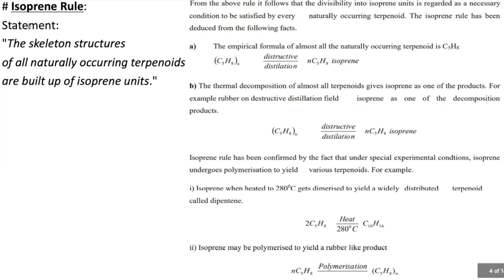What is the isoprene rule? The isoprene rule states that the skeletal structure of all naturally occurring terpenoids is built up of isoprene units. This rule is supported by the fact that the empirical formula of most naturally occurring terpenoids is (C₅H₈)ₙ, giving n number of C₅H₈ units, which is the general formula of isoprene.